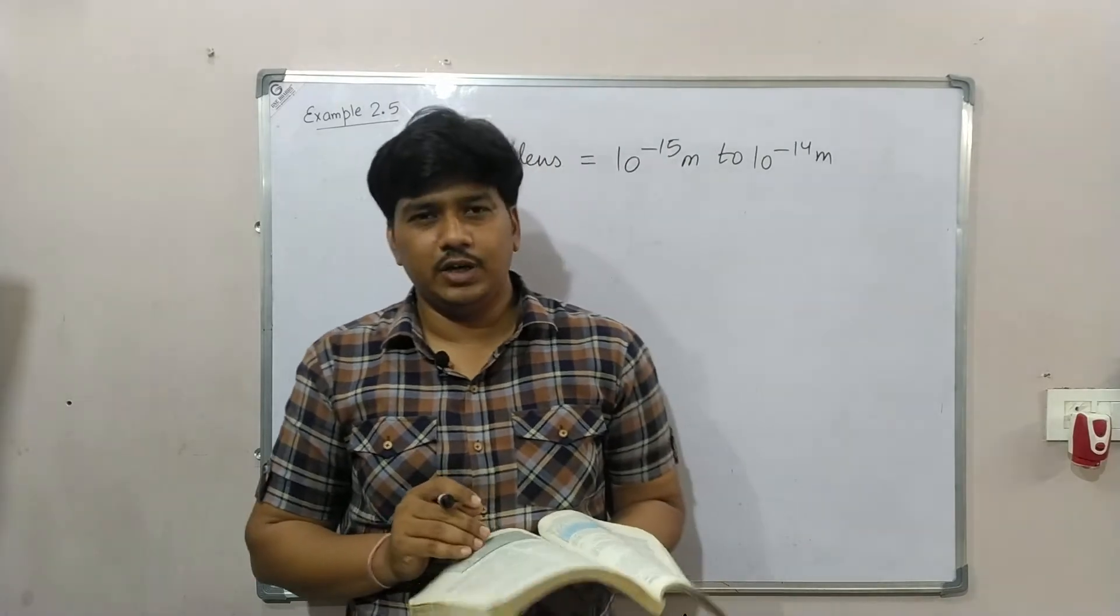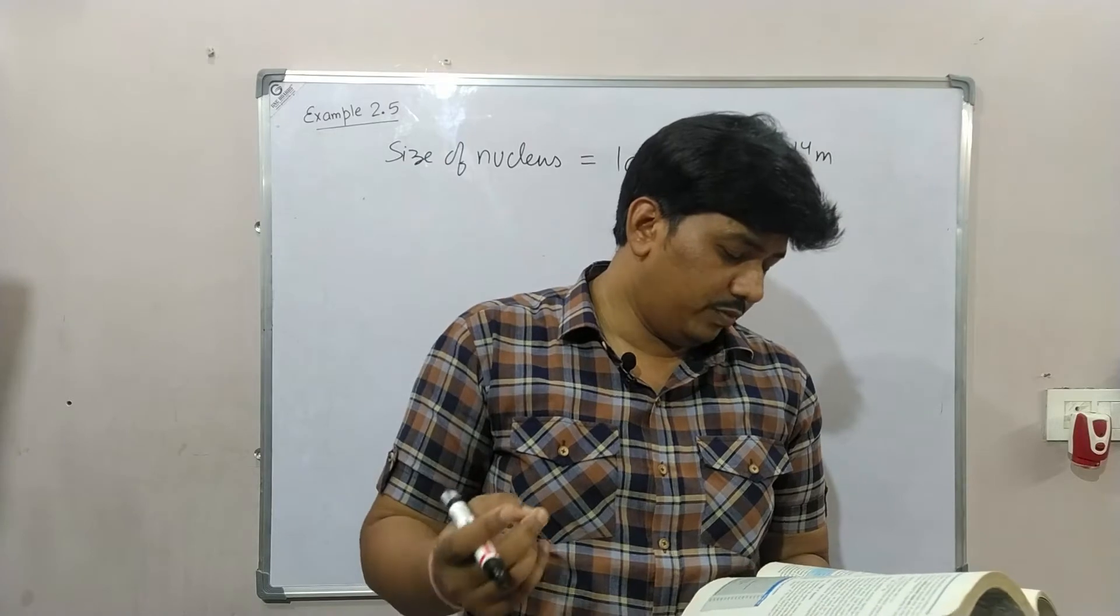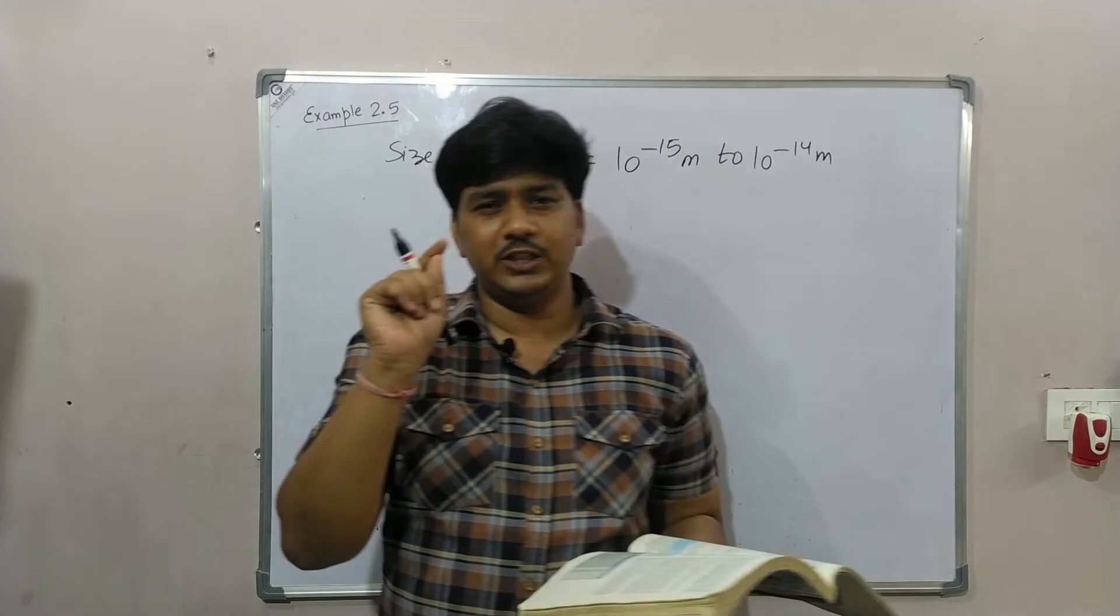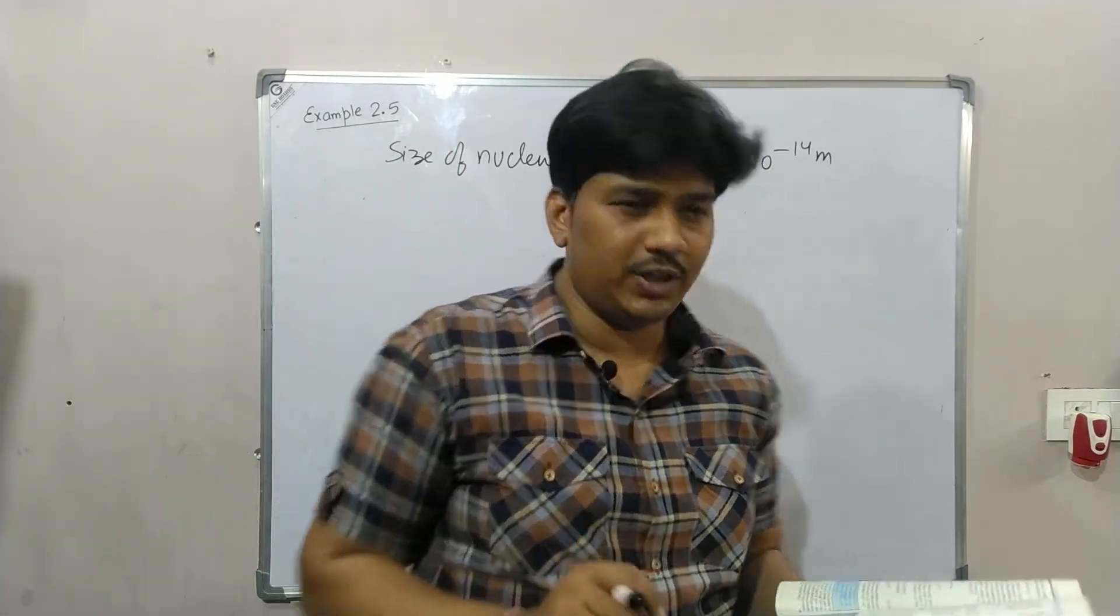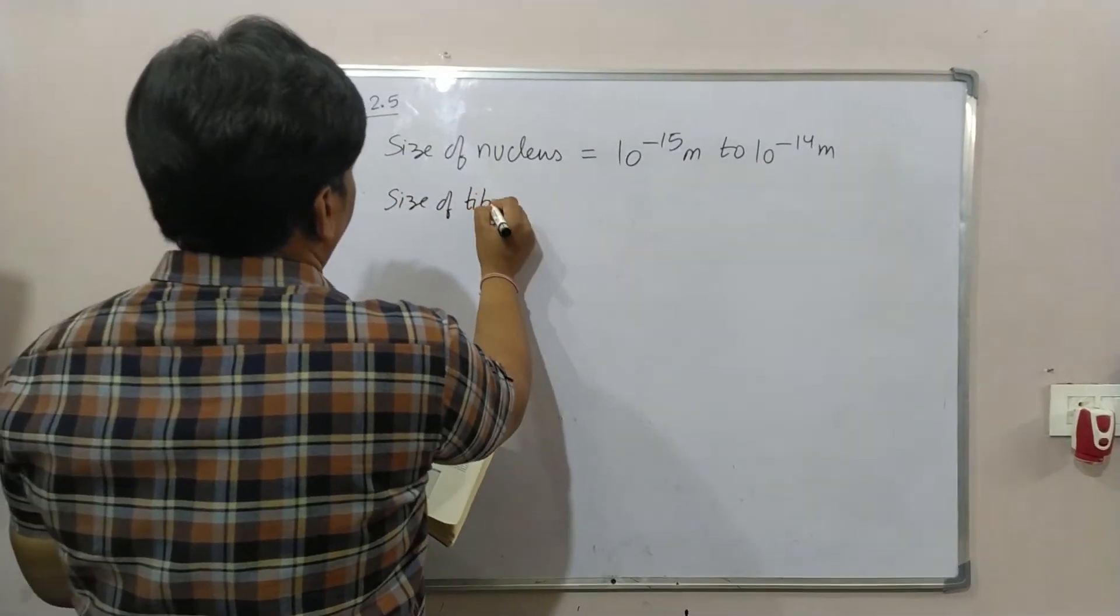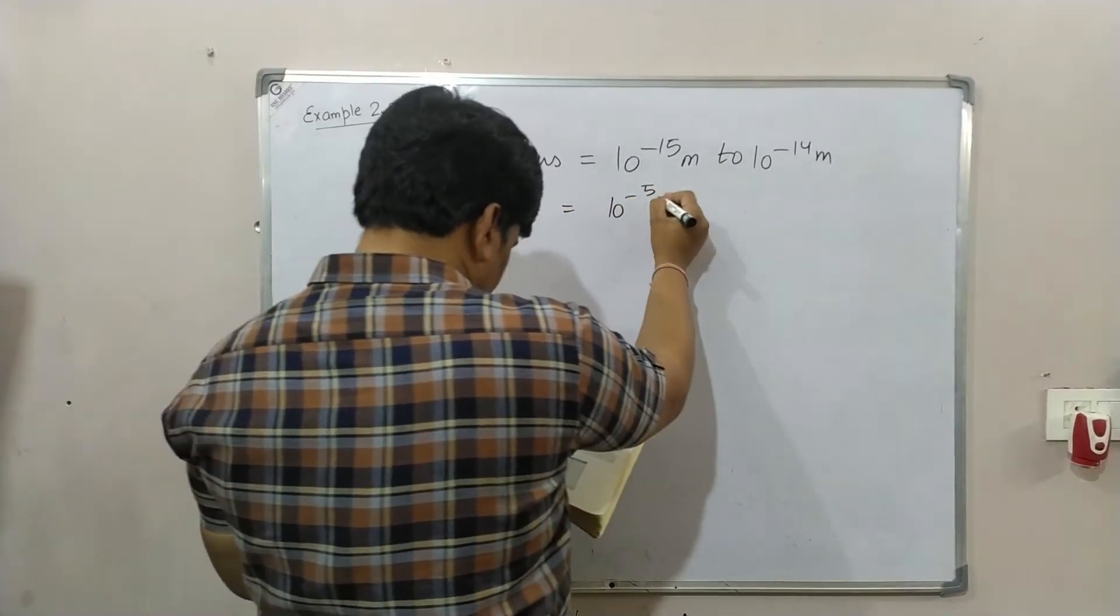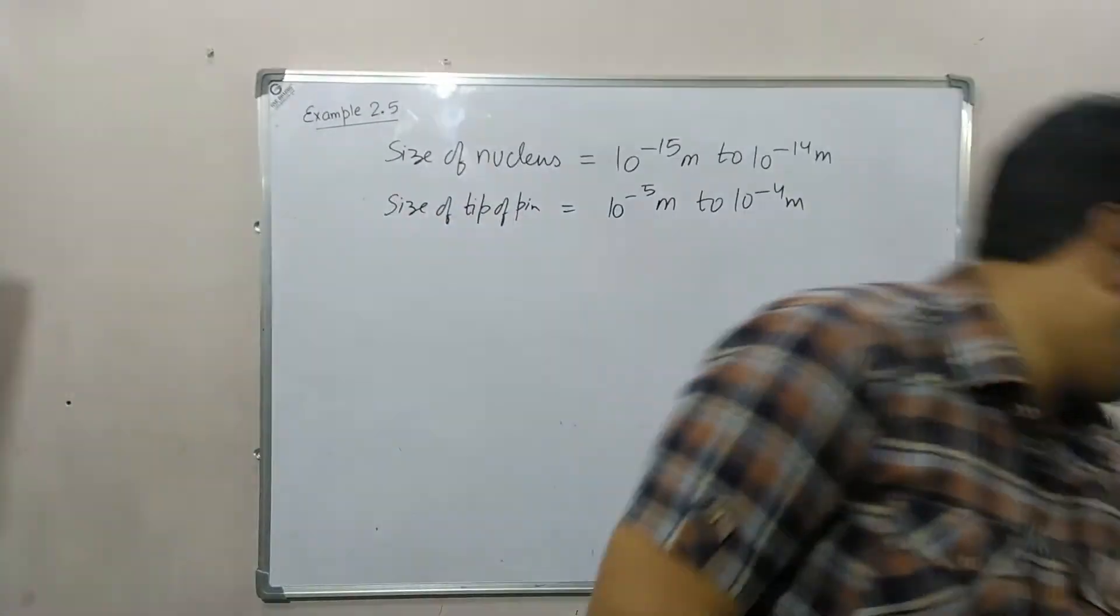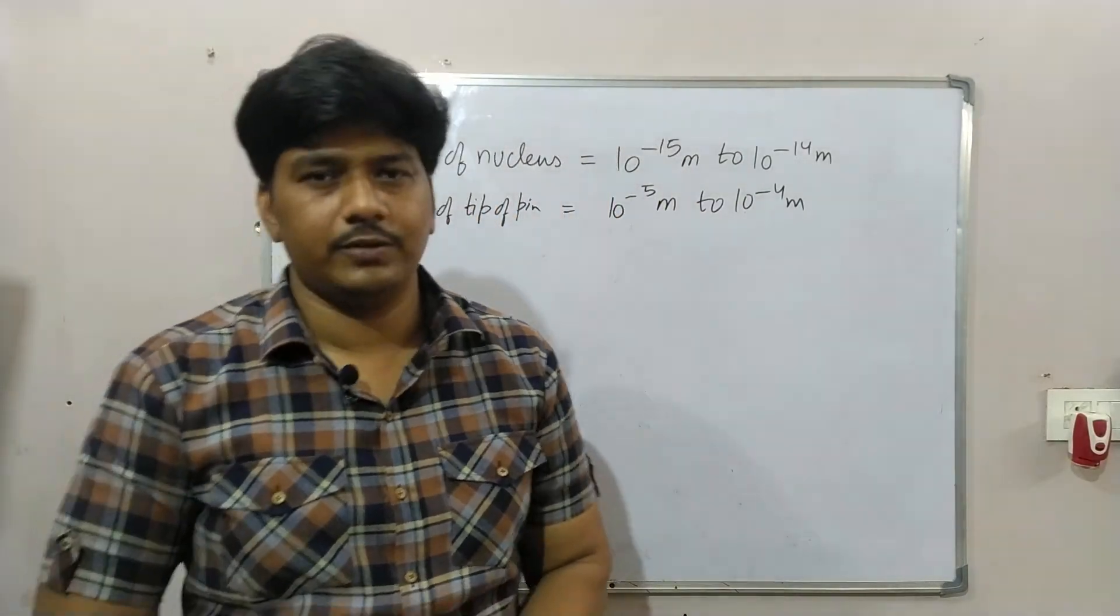What roughly is the size of the atom if you do this? Assume the tip of the pin to be in the range. The tip of the pin has a size range of 10 to the power minus 5 meter to 10 to the power minus 4 meter, approximately 10^-5 m to 10^-4 m.